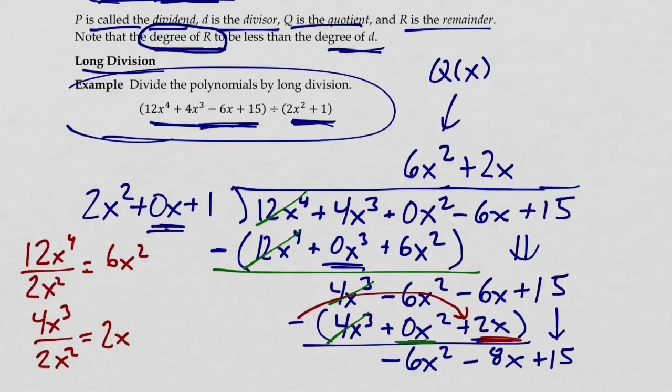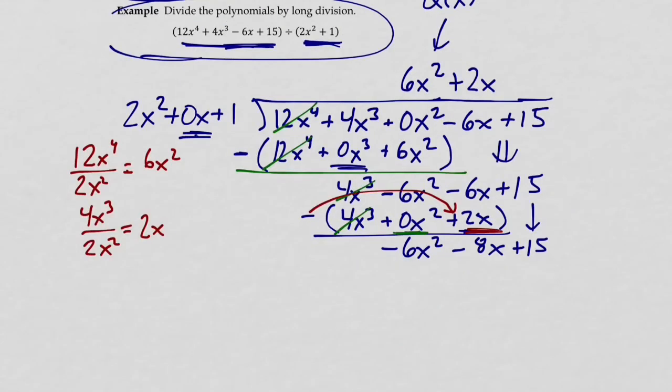So there's going to be one more step in our process. We have a new, again, a new simpler dividend. I want to take the lead coefficient, the highest degree term of the dividend, negative 6x², and divide that by 2x². That gives me negative 3. Just simply the number, negative 3. And that's the final term of our quotient. And then, if I multiply negative 3 times the divisor, we get negative 6x² plus 0x minus 3.